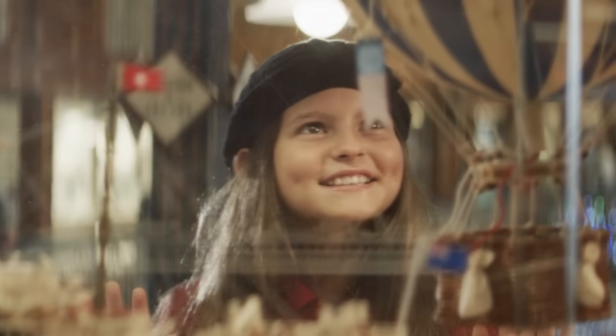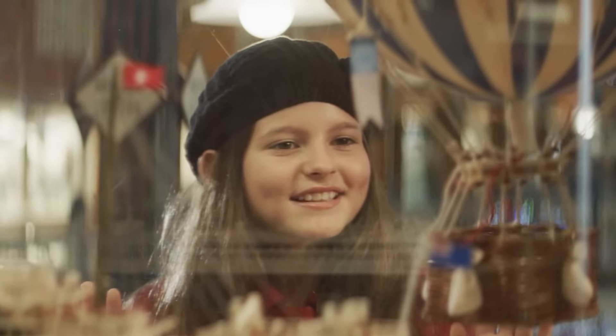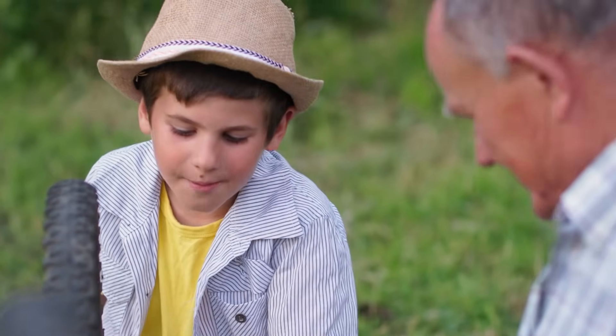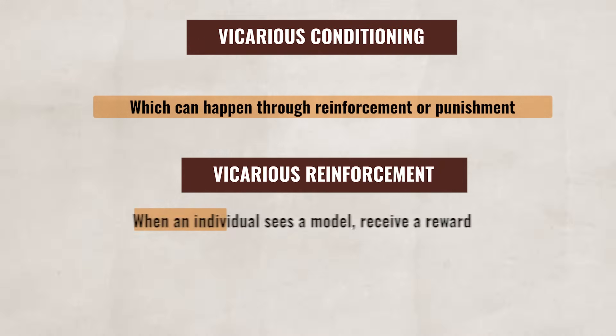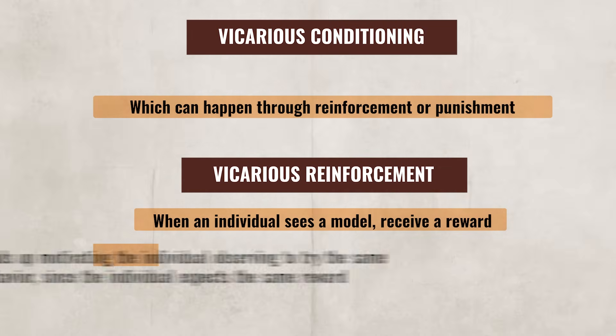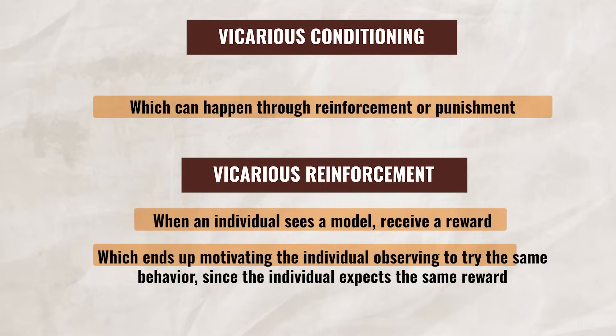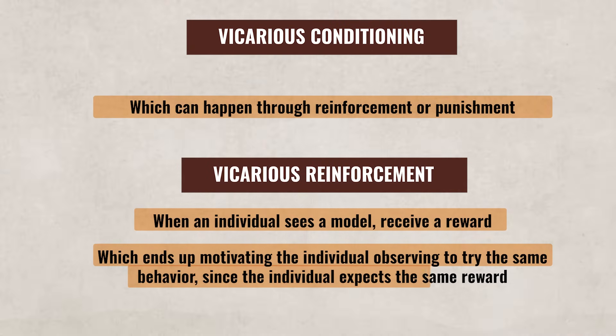Generally with social learning, once an individual has observed a behavior, they will often copy or imitate the behavior they witness. This happens more frequently if the individual identifies with the model — the person that the individual is watching — and also if they respect and look up to that model. For example, this is why kids who idolize particular athletes often try to dress like them or imitate their behavior. Another aspect of social learning is vicarious conditioning, which can happen through reinforcement or punishment.